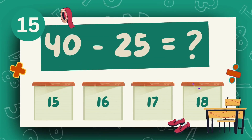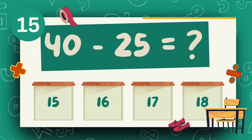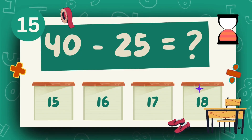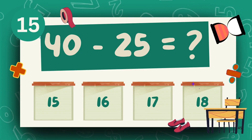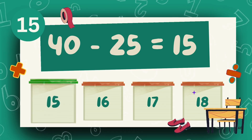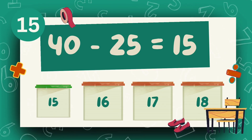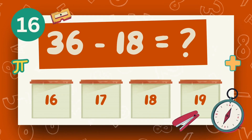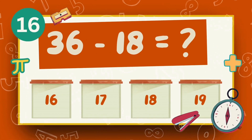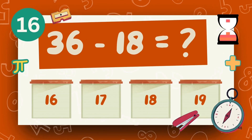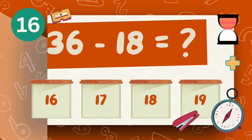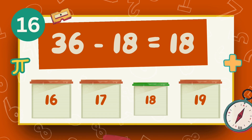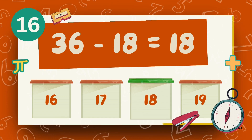What is 40 minus 25? The answer is 15. What is 36 minus 18? The answer is 18.